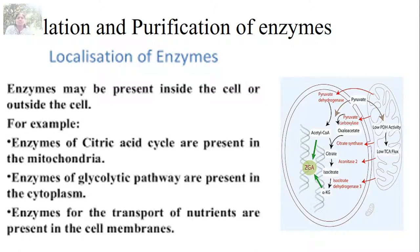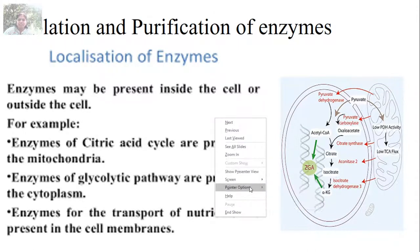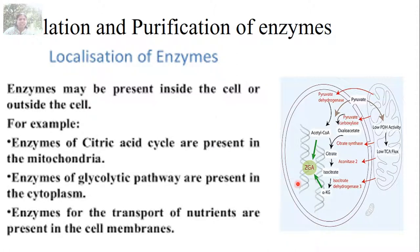In the process of isolation and purification of enzymes, first you have to select a rich source of the enzymes and also you have to localize the enzymes — whether they are present inside the cell, inside which organelles, or whether they are outside the cells. So enzymes may be present inside the cell or outside the cell. The first step after selection of the source is to localize the enzymes.